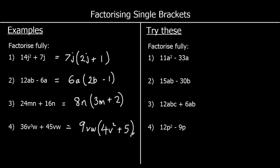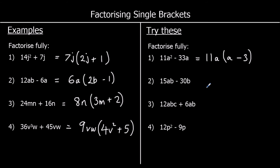Next: 11a squared minus 33a. 11 and 33 are both in the 11 times table, and they've both got an a in them, so 11a comes outside the brackets. 11a times a makes 11a squared, and 11a times negative 3 makes negative 33a.